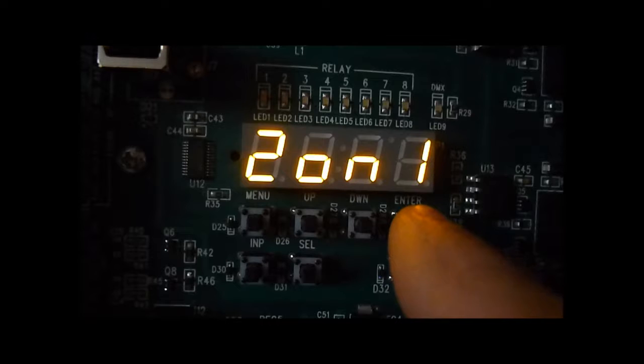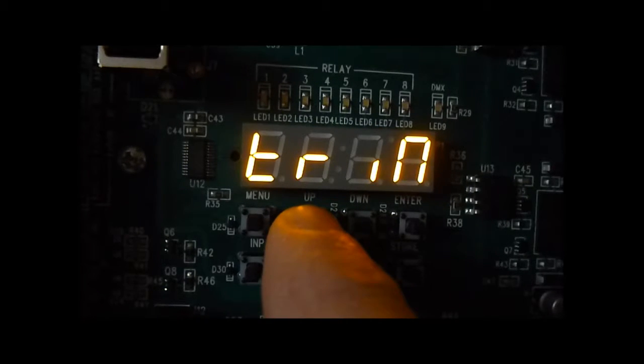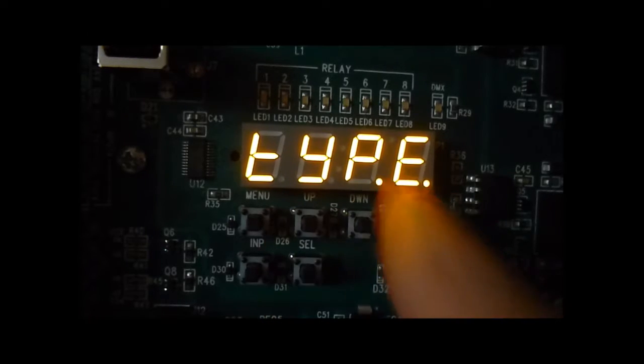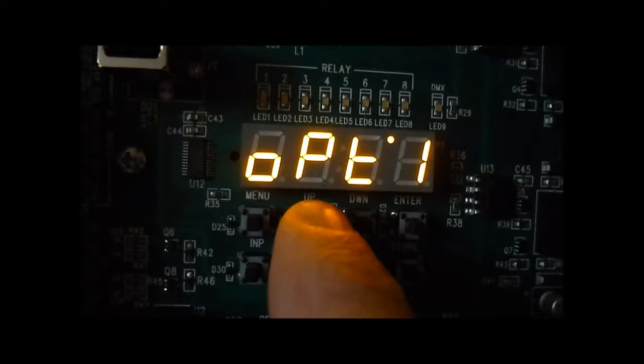Press enter. There are several options here for each zone you set up: the type and the trim. There's a high and low trim. We'll go to type and there are three options. Option 1 is 0 to 10 volt dimming, which is the default. Option 2 is switched, and option 3 is receptacle mode.